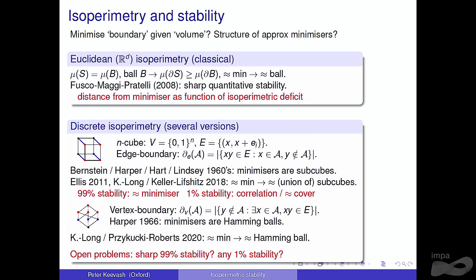The classical isoperimetric problem in the Euclidean setting asks: given some object of a given volume, you want to minimize its boundary. In the Euclidean setting, volume is what you think it is, the boundary is the surface area of the shape, and the statement is that among all shapes of given volume, the ball has the smallest surface area.